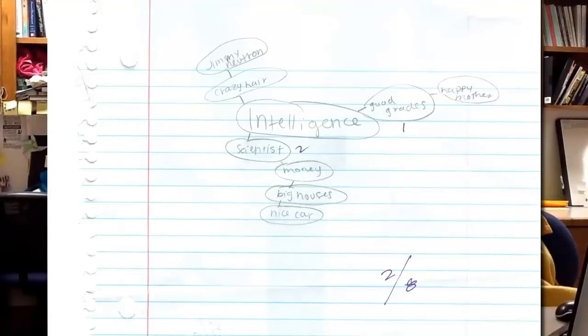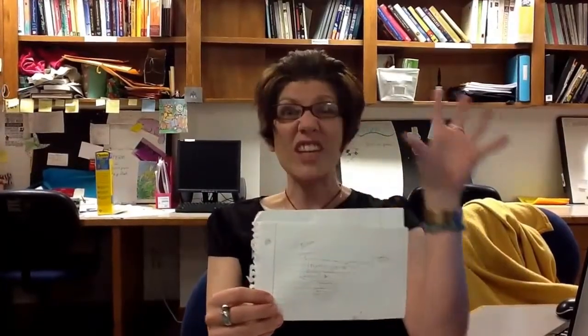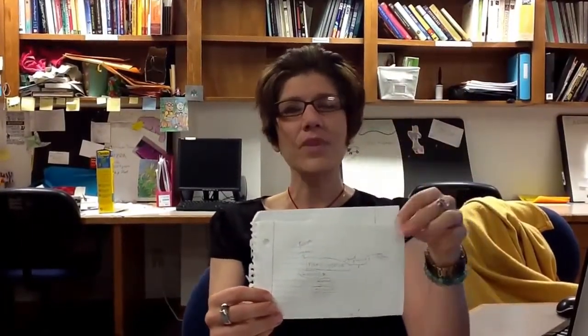Things branched out from science, money, big hair, and so forth. The way semantic networking works is we don't have any idea how different concepts are going to relate and what's going to trigger what.